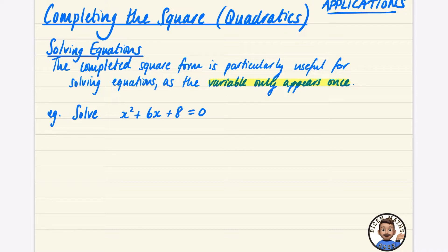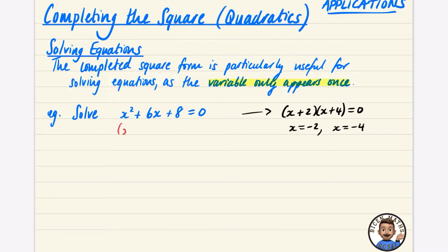So for x² + 6x + 8 = 0, if you factorize you quickly get (x + 2)(x + 4) = 0, meaning x = −2 or x = −4. Now let's try completing the square: that gives us (x + 3)² − 9 + 8 = 0, which simplifies to (x + 3)² − 1 = 0.